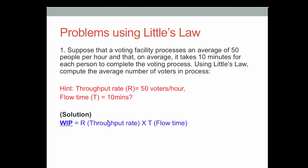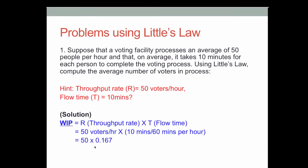Going to the solution: WIP equals throughput rate R times flow time t. Since we know the throughput rate and flow time, we can find the third variable — work in process inventory. That is 50 volts per hour times 10 minutes, but we divide by 60 minutes to convert into hours.